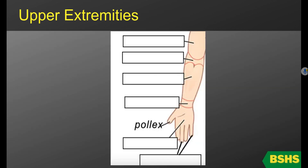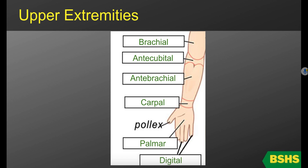Now let's talk about regions of the upper extremities — the appendicular part of the body. Brachial is the upper arm. Antecubital is the inner elbow. Antebrachial is the forearm. Carpal is the wrist. Palmar is the palm. Digital refers to the fingers. And pollex refers to the thumb.